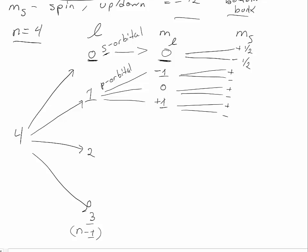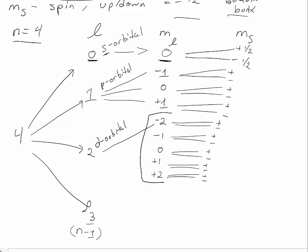For the l of 2, this is a d orbital. The m sub l's will range from negative 2 to negative 1, 0, positive 1, and positive 2. And again, for each of these, there are two possible spin values, because each orbital can hold two electrons. Notice that there are five d orbitals, three p orbitals, one s orbital. So far we have one, three, five.